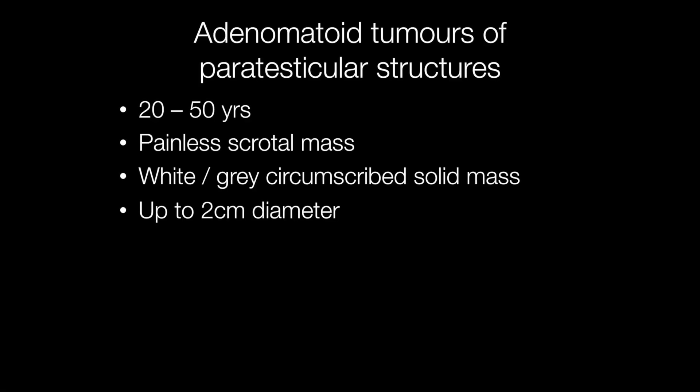Adenomatoid tumours of the paratesticular structures such as the epididymis tend to occur between the ages of 20 and 50. They present as a painless scrotal mass, and the cut surface reveals a circumscribed white or grey solid mass. The typical size is up to two centimetres in diameter.